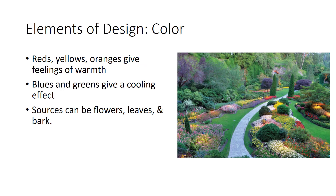For a landscape design to be successful, it must include considerations of the plant's features. Color is a design element that people respond to in different ways and should be used carefully to produce a successful design. Different colors elicit different responses. For example, reds, yellows, and oranges give the feeling of warmth and the appearance of coming toward the viewer, whereas blues and greens give a cool feeling and appear to the viewer as if they are in the background. Sources of color in the landscape are flowers, green variegated or seasonal leaves, and the bark on trees. These sources provide the landscape designer with a wide variety of options.